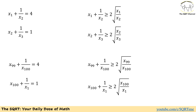If we use the AM-GM inequality, we can say x1 plus 1 over x2 is greater than or equal to 2 times the square root of x1 over x2. You can write the same AM-GM inequality for the other variables, and you are going to end up with what we have here.